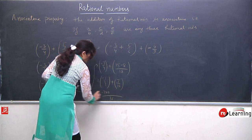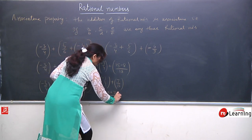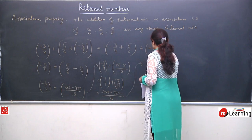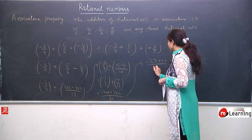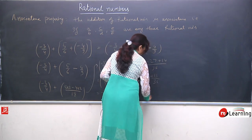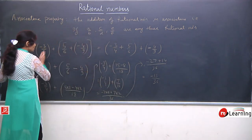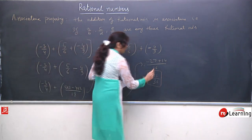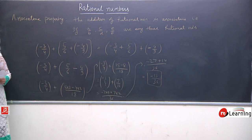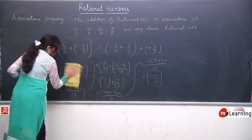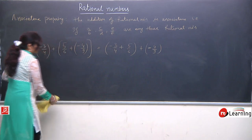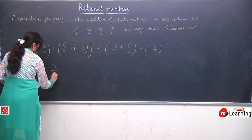Now solving the right-hand side: LCM of 6 and 4 is 12. So (−3×3 + 5×2)/12 = (−9 + 10)/12 = 1/12. Now we have 1/12 + (−4/9). LCM of 12 and 9 is 36. This gives (1×3 − 4×4)/36 = (3 − 16)/36 = −13/36. The right-hand side also equals −13/36.